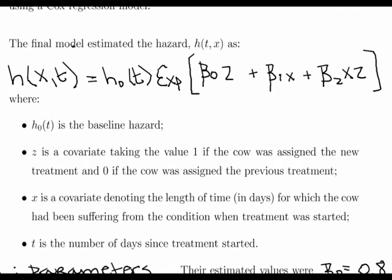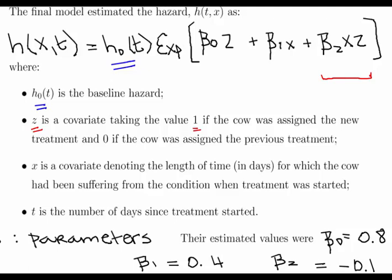What we have here is the baseline hazard H0 of T. Z is a covariate taking the value 1 if the cow is assigned to the new treatment and 0 if the cow is assigned to the previous treatment. This part will only activate if the cow is taking the new treatment. If the cow is taking the previous treatment, Z is set to 0 and it's excluded from the overall calculation. So it's a binary indicator variable — essentially just yes or no: is the cow on the new treatment?